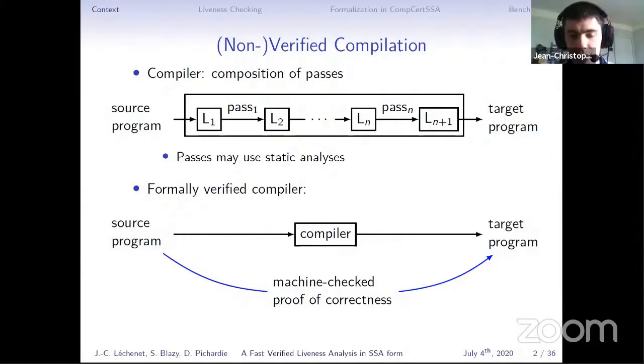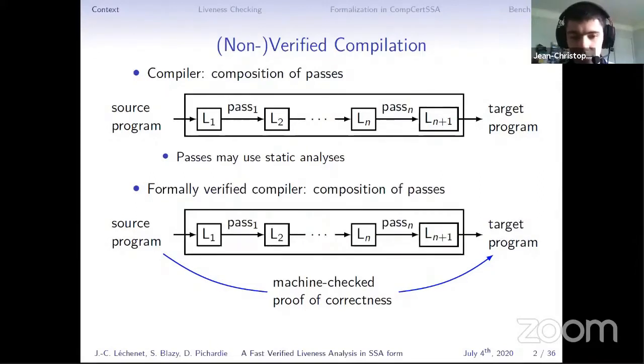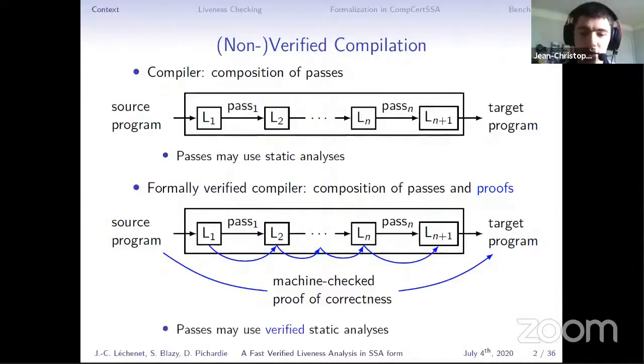Formally verified compilers reuse the standard architecture as a composition of passes. What is more interesting is that they also use a composition of proofs, so the proof of correctness of the whole compiler is the composition of the proof of each pass. And again, the passes can use static analysis, but in this case, they must be verified.